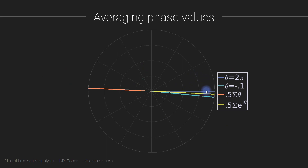The idea is that if we want to look for consistency of phase angles, we do not average the phase angles themselves. Instead, we average the vectors themselves. We can think about the angle of the resulting average vector, but it turns out we don't really care about the angle — what we care about is the length of this average vector.